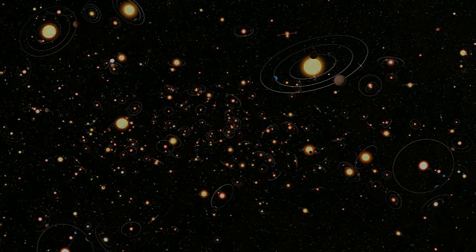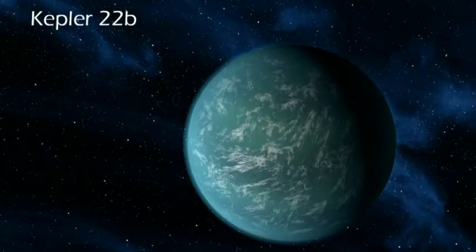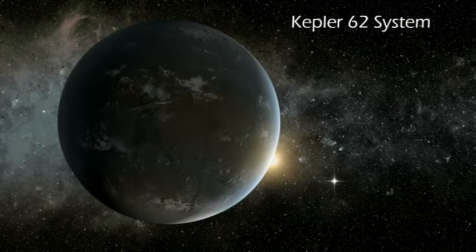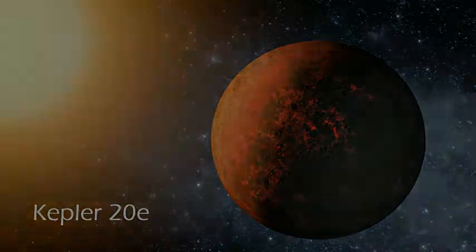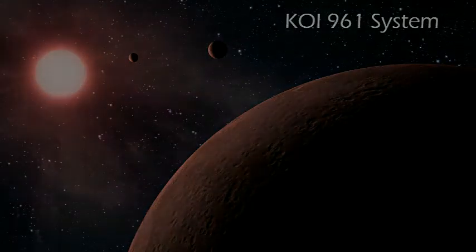Since the launch of the Kepler Space Telescope in 2009, we've identified thousands of planets orbiting other stars, and our knowledge about them has grown tremendously. How have we learned so much so fast? And how has our understanding of physics played a role in this great detective story?